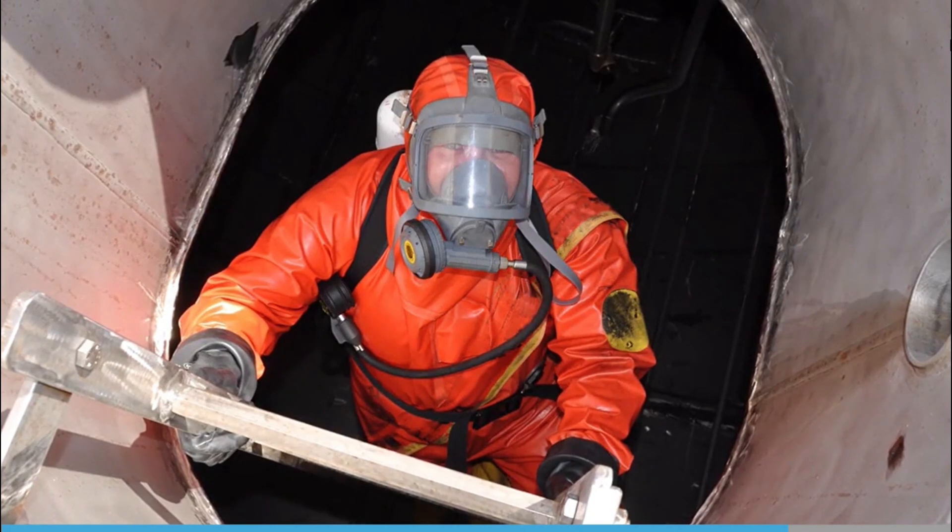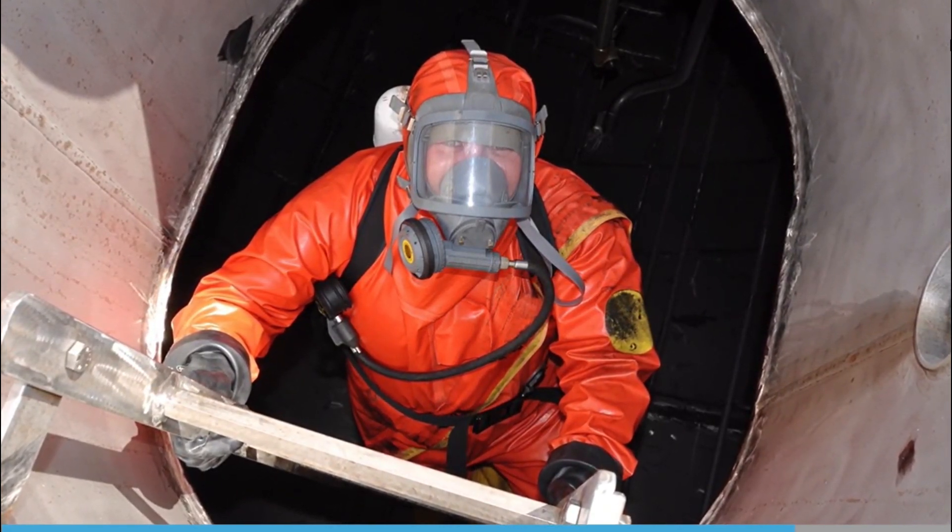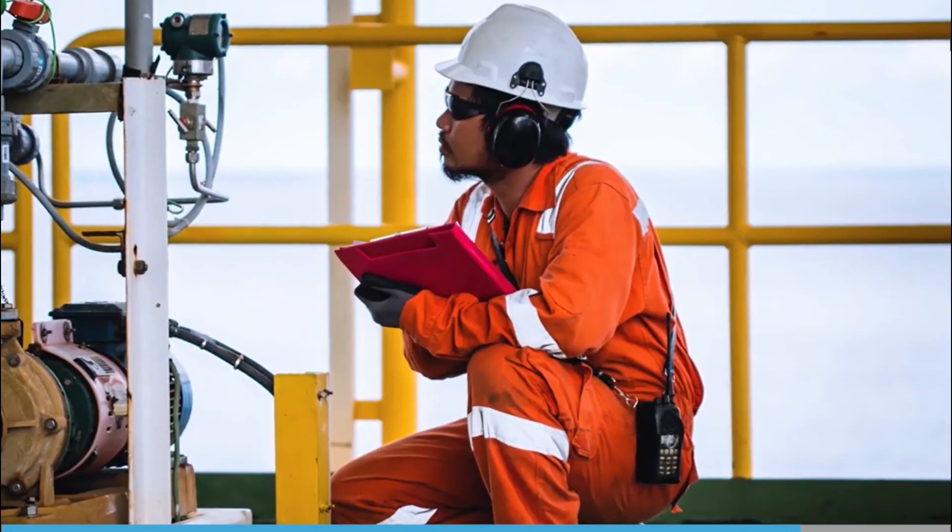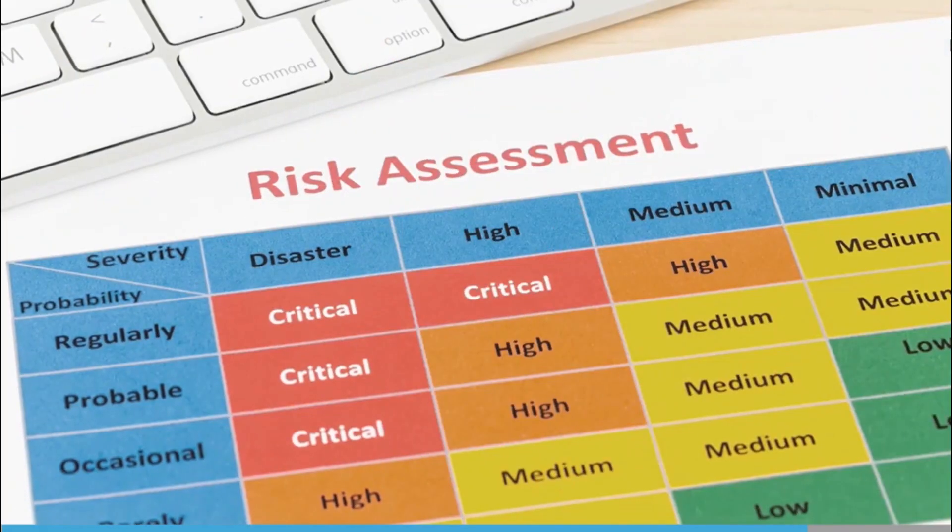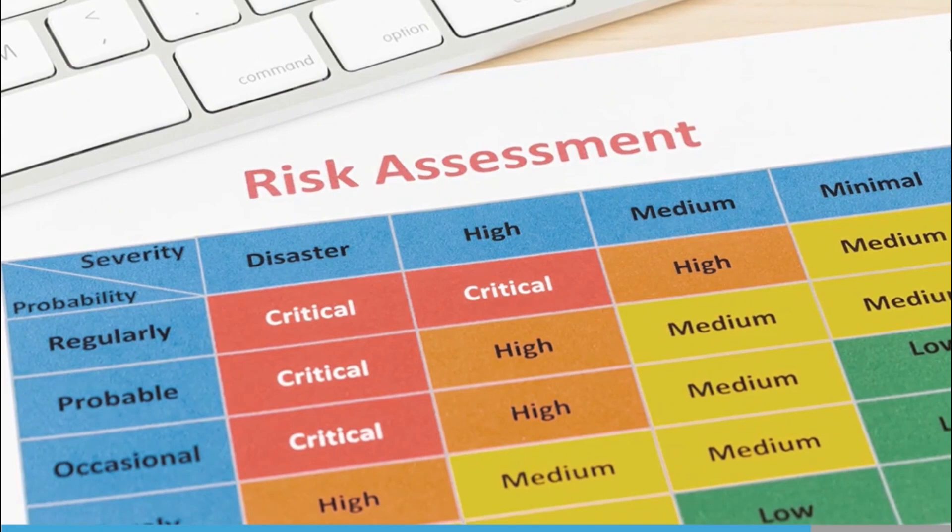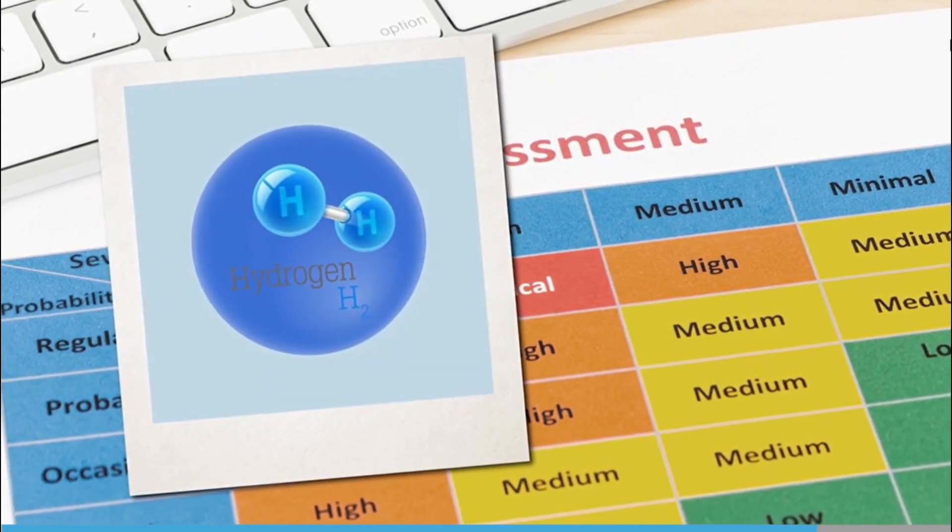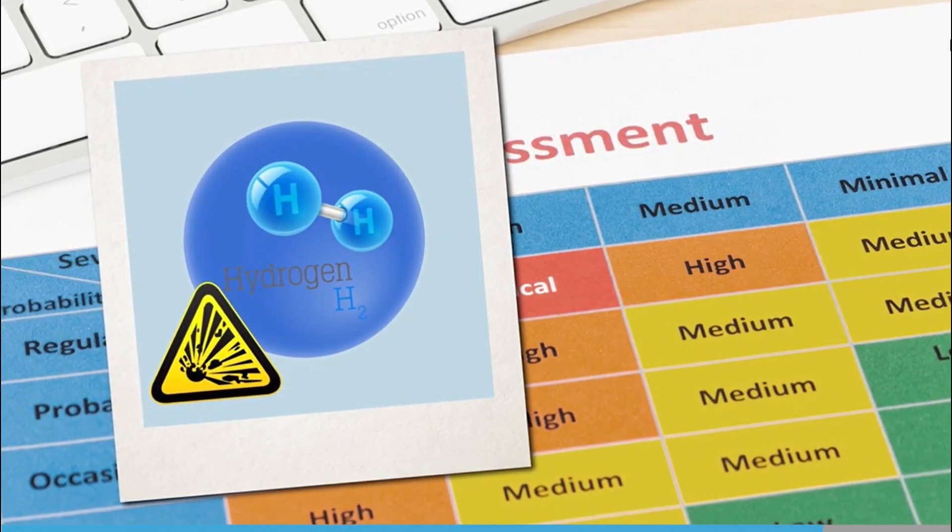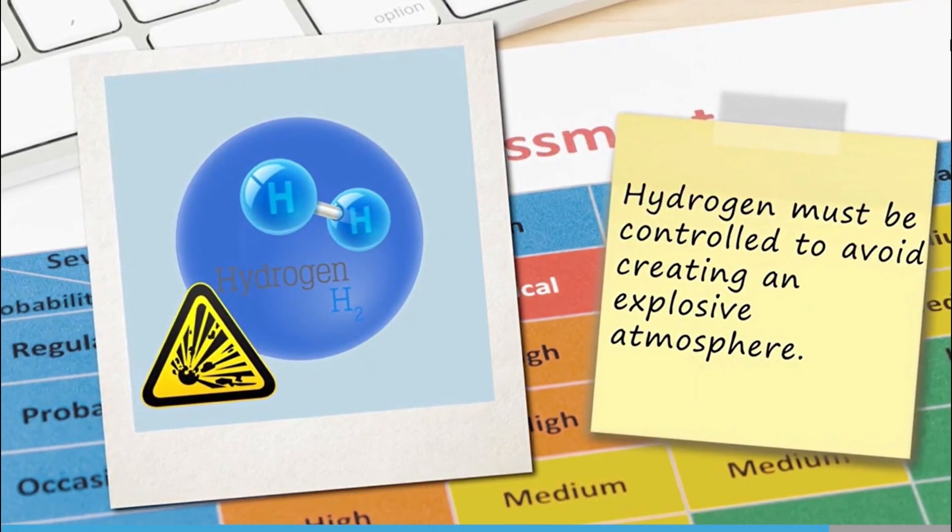Active substances used to kill unwanted organisms may also be harmful to the crew and the environment. The risks in storing and using the substances must be assessed with respect to the crew and environment, and always in accordance with the manufacturer's instructions. A byproduct of electrolysis is hydrogen, which is explosive when mixed with air. The hydrogen must be controlled to avoid creating an explosive atmosphere.